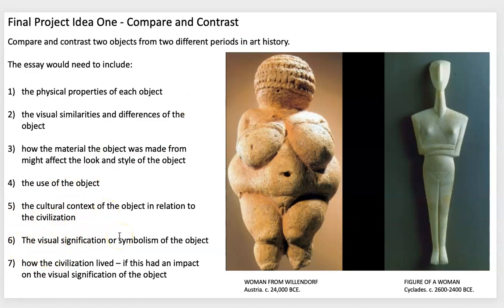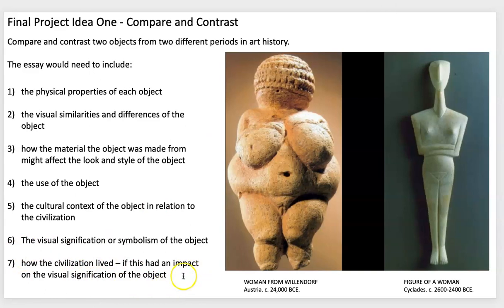Address any visual significance or symbolism of the object, which you can find in the readings, further research, and by reviewing the lecture PDFs for the different art historical periods. Then discuss how that civilization lived and how that might impact the object's significance and symbolism.